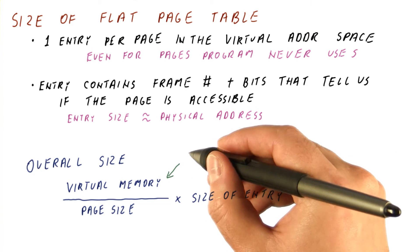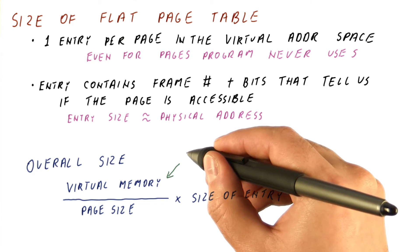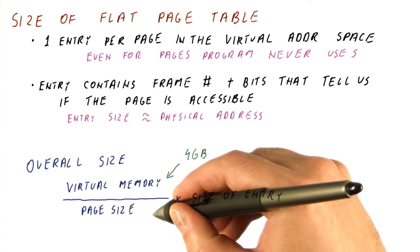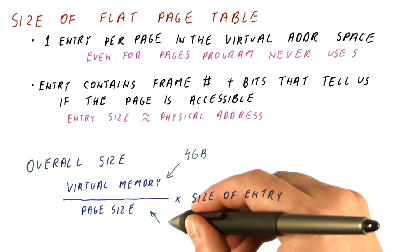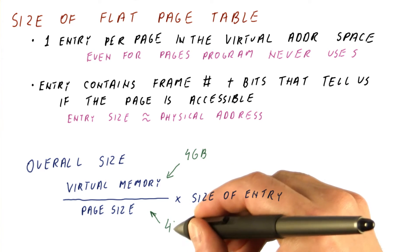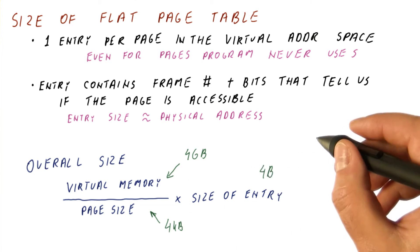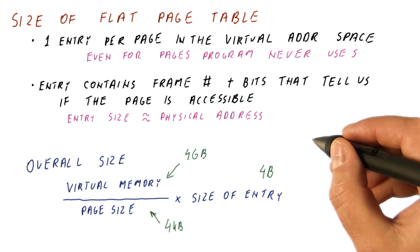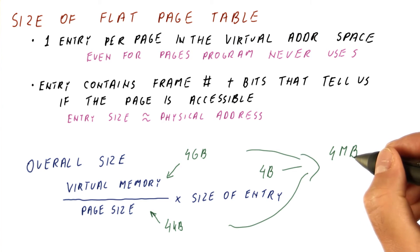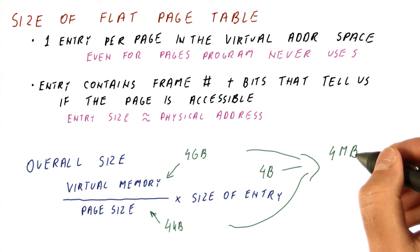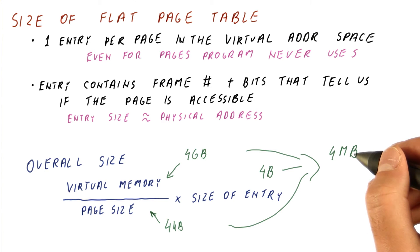Let's look at an example where the virtual memory size is 4 gigabytes for a process, the page size is 4 kilobytes, and the size of an entry is 4 bytes. In that case, we get a 4 megabyte page table per process.